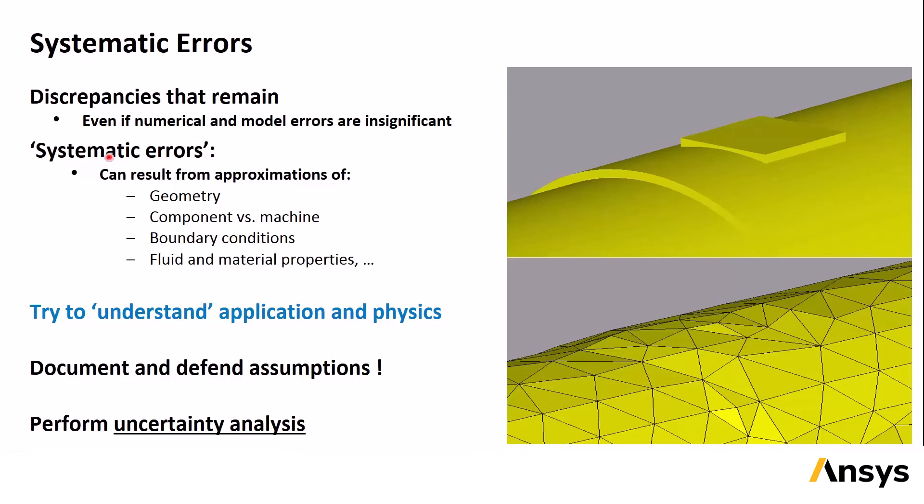Solution accuracy can also be diminished by systematic errors. This can result in discrepancies even if model and numerical errors are insignificant. Systematic errors can result from approximations of geometry, like we see in the images on the right, where some of the details of the surface have been paved over by the mesh, or they can also result from modeling just a component instead of a larger part of the system, or from uncertainty regarding boundary conditions, or fluid, or material properties. The most effective way to minimize systematic errors is to really understand the application and physics. It's possible to look at the pictures on the right and think that the mesh must be bad because some details are missing. But depending on the application, this might not have any effect on the results. If you understand the application in physics, then you will know what level of geometrical detail is needed.